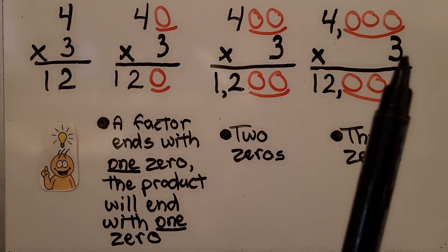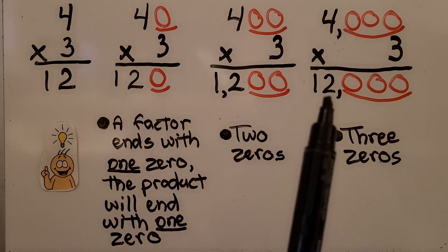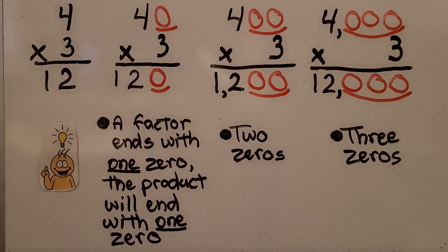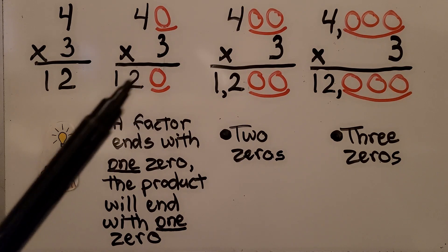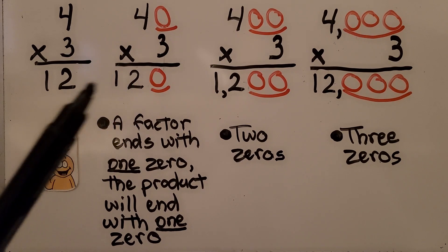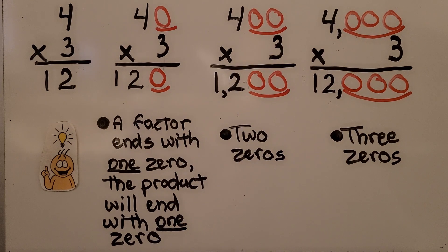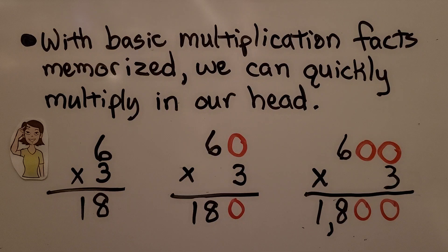For 1,000 times 3, we still have our 12, but we have three zeros, which makes it 12,000. The factor ends with one zero, the product will end with one zero. Two zeros, we have two zeros. Three zeros, we have three zeros. With basic multiplication facts memorized, we can quickly multiply in our head — we don't need paper and pencil.